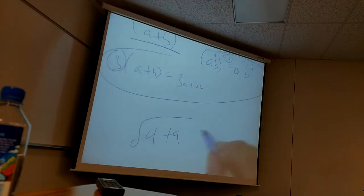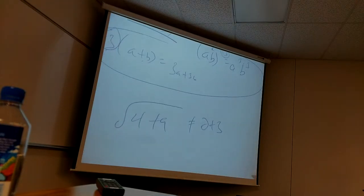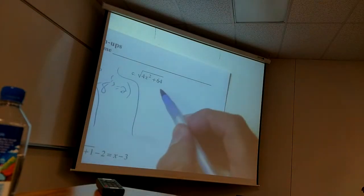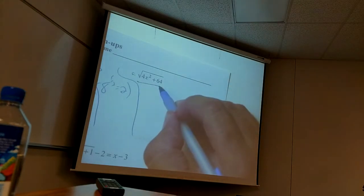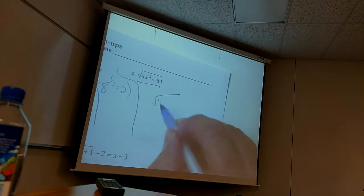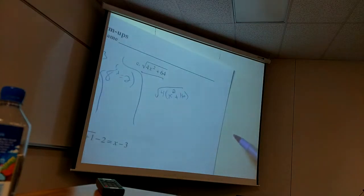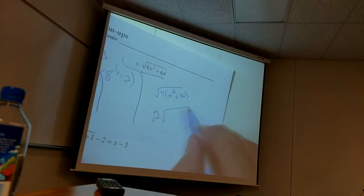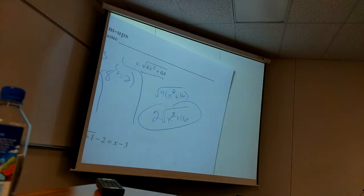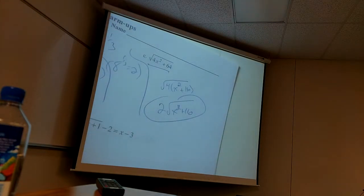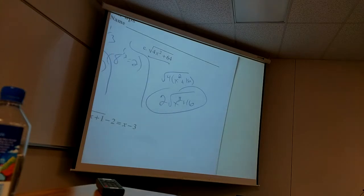For example, the square root of (4 + 9) is not 2 + 3 — because then the square root of 13 would be 5, which it isn't. So that expression is not 2x + 8 or whatever. The only thing you can do with a sum under a radical is simplify the radical itself — for instance, square root of 4 is 2, or square root of x², square root of 16, and so on. Making that mistake is going to make a lot of the subsequent work wrong.